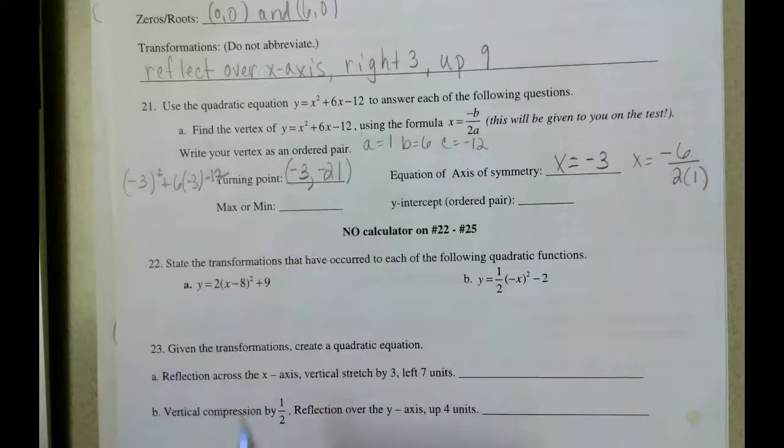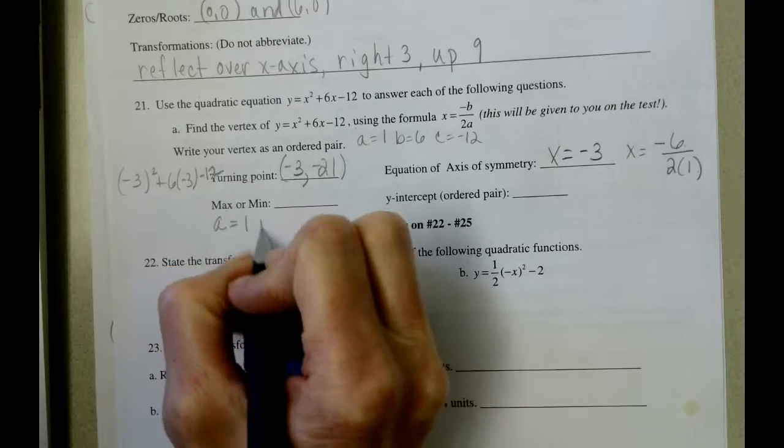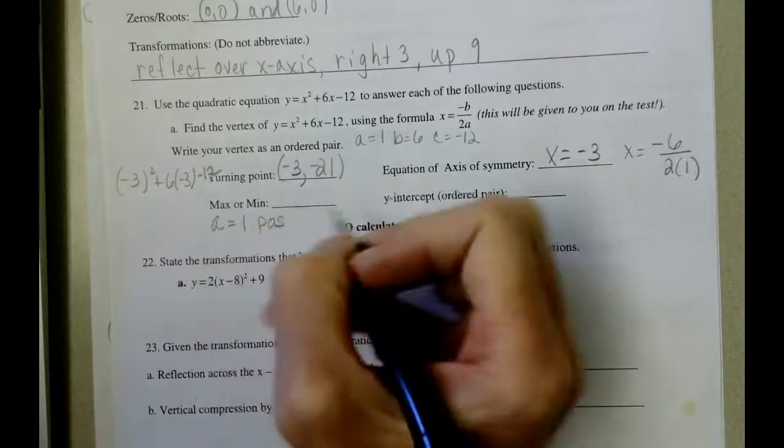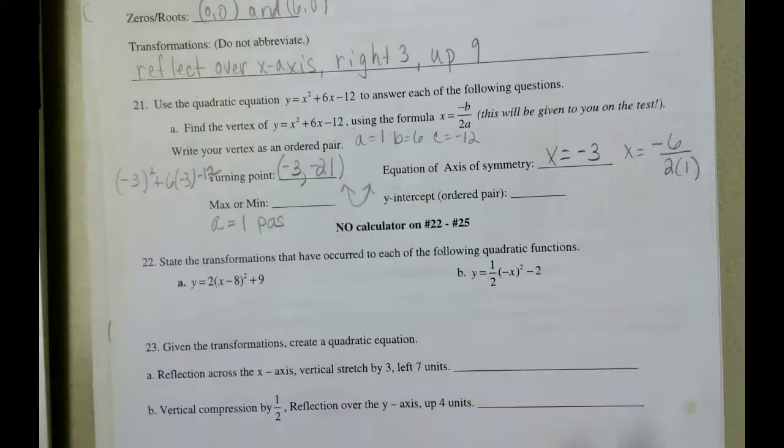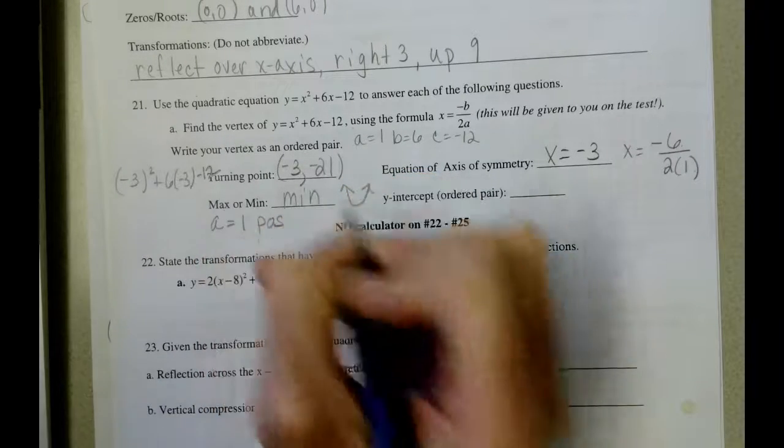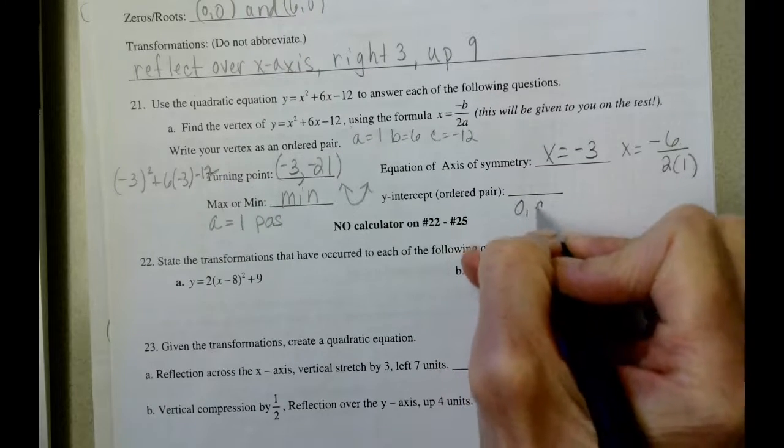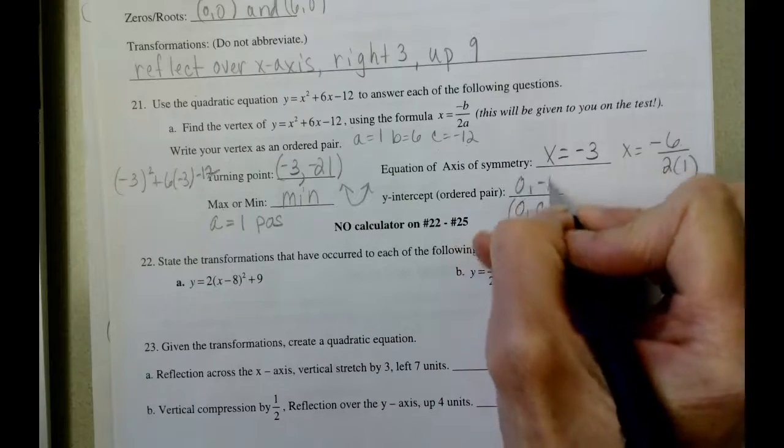With regard to the maximum or minimum, a is 1, which is a positive number, and when it's a positive number, our graph would look like this, and I'm never going to know if you type it into your calculator and look at the picture, but that means that this is going to be a minimum value, and our y intercept is 0c. Again, here's c, so this is going to be 0 negative 12.